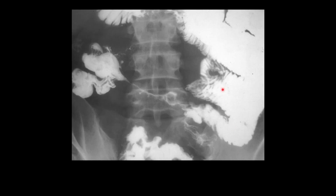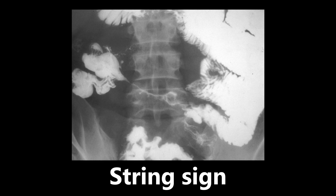More radiology — we have another x-ray. On one side it's bright with contrast, and then it thins out significantly. What we're looking at is called a string sign, also known as the string sign of Kantor, seen on a barium swallow. This is a severe narrowing of the bowel leading to a string-like appearance. This can be seen in multiple diseases: the high yield ones to know are Crohn disease, colon cancer, and gastrointestinal tuberculosis.